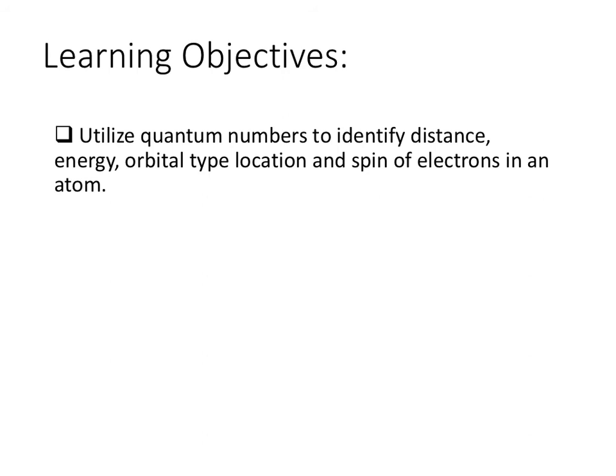After watching this video lecture, students will be able to utilize quantum numbers to identify the distance, energy, orbital type location, and spin of electrons that are found in an atom.